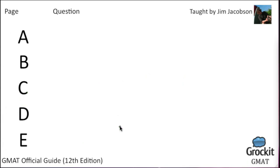Two more — page 508, question number 75: An overly centralized economy, not the changes in the climate, is responsible for the poor agricultural production in country X since its new government came to power. Neighboring country Y has experienced the same climatic conditions, but while agricultural production has been falling in country X, it has been rising in country Y. Which of the following, if true, would most weaken the argument?